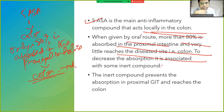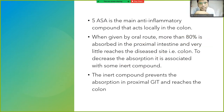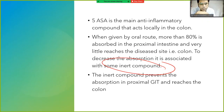To decrease the absorption in the proximal intestine and ensure the drug reaches the colon directly, we use a derivative combined with an inner compound. That inner compound is sulfapyridine combined with 5-ASA. This inner compound prevents absorption in the proximal GIT and ensures the drug reaches the colon.